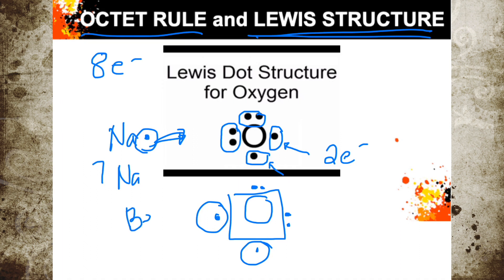Beryllium (Be), which is in group 2A, will have two dots outside. Oxygen, which is in group 6A, will have six dots. And chlorine, which is in group 7A, will have seven dots — that's one, two, three, four, five, six, seven.